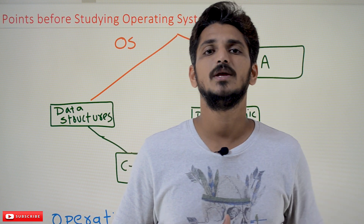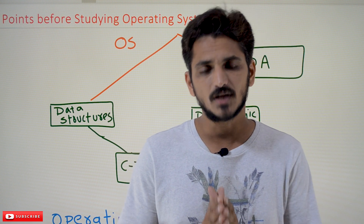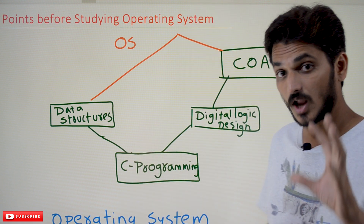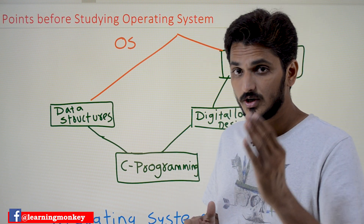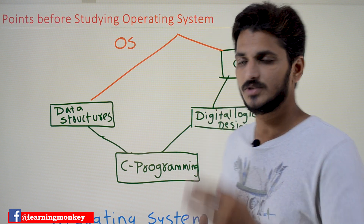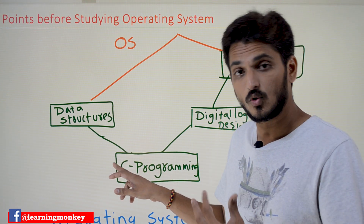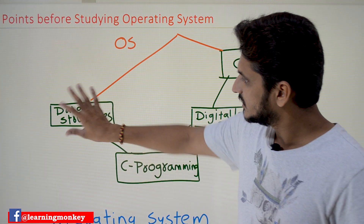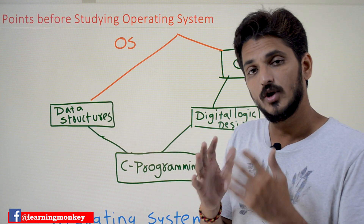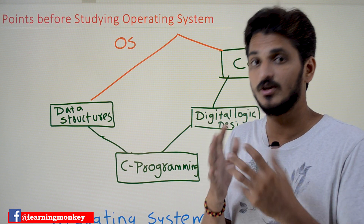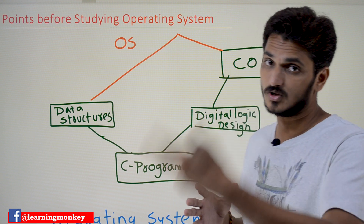Please watch this video till the end and keep those points in mind before you start studying operating system — it will help you a lot. In our previous videos, we discussed that a computer science student typically starts with C programming. After C programming, to improve coding knowledge, he starts studying data structures. After data structures, he has a good understanding of coding — but coding alone is not enough; hardware understanding is also important.